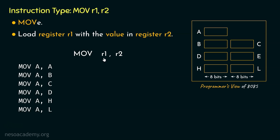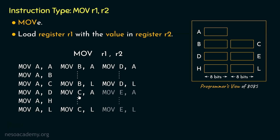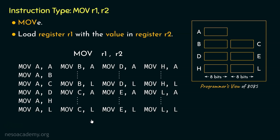If in place of R1 we consider register B, we will have the first instruction as MOV B,A and the 7th instruction as MOV B,L. We can see similar patterns if in place of R1 we consider all the different GPRs: C, D, E, H, and L. So clearly, we have 7 different registers for R1, and for each of those, R2 can also have 7 different variations. In total, 7 multiplied by 7 equals 49 instructions for this type MOV R1,R2.